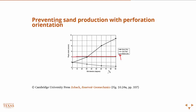As a function of well deviation, there are two potential perforation orientations: horizontal or vertical. You can see that in all cases, if you perforate vertically, no matter the deviation, you'll be below that critical value where you'd expect to produce sand. However, at highly deviated wells with horizontal perforations, you're going to be in high regions of plastic strain and expected to produce a lot of sand.